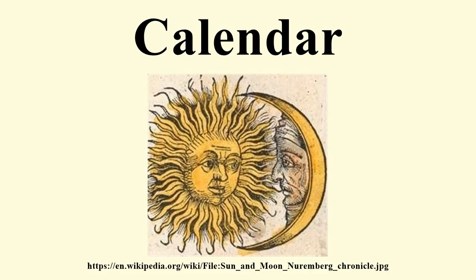Calendars may be either complete or incomplete. Complete calendars provide a way of naming each consecutive day, while incomplete calendars do not. The early Roman calendar, which had no way of designating the days of the winter months other than to lump them together as winter, is an example of an incomplete calendar, while the Gregorian calendar is an example of a complete calendar.